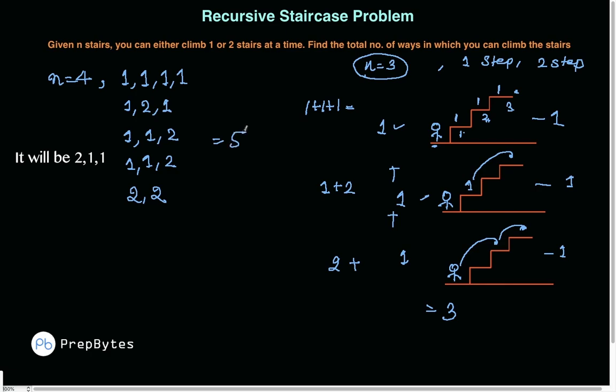So I hope you've understood the problem. To repeat: you are given N stairs, and you have to climb either one or two stairs at a time. You just have to find the total number of ways. If you're seeing this problem for the very first time, I'm going to talk about how to approach it.